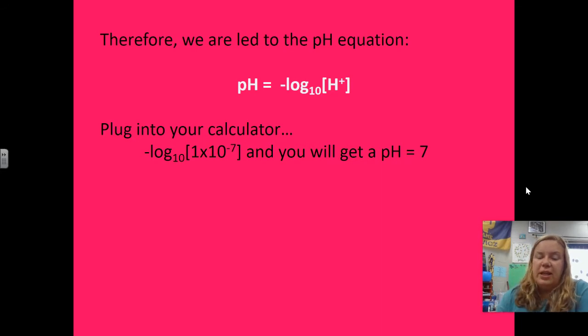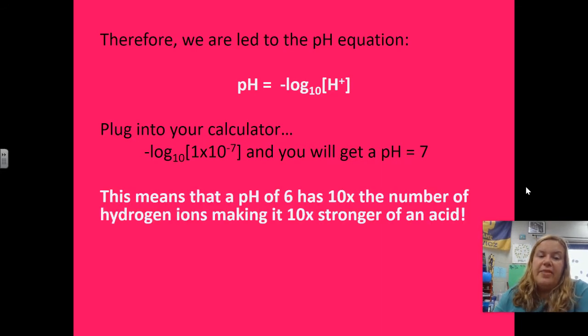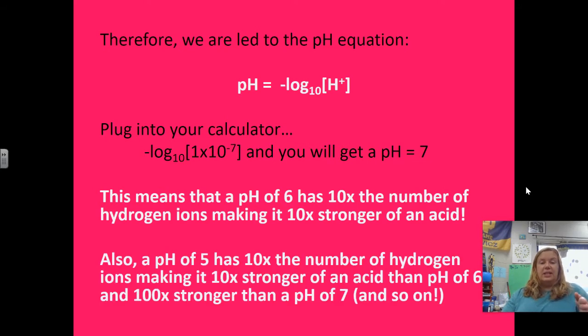That means that a pH of 6 has 10 times the number of hydrogen ions, making it 10 times stronger of an acid. So just going one space on the pH scale from a 7 to a 6 is 10 times stronger of an acid. So that means if you go from a 6 to a 5, you have 10 times the number of hydrogen ions than you had for a pH of 6, 100 times then stronger than a pH of 7, and so forth.